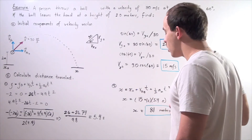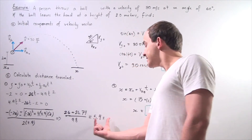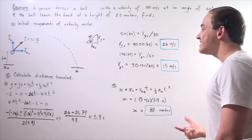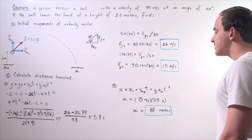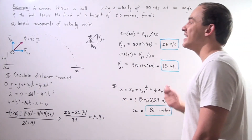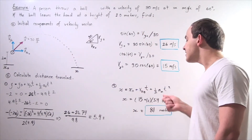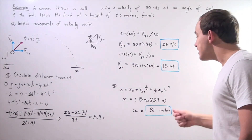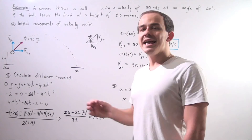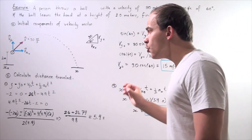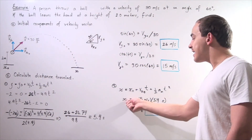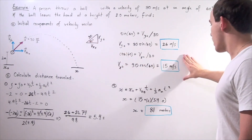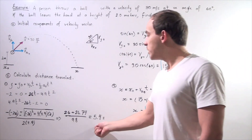Now we use this time interval — which tells us how long our object spent in the air — to solve for our distance along the x-axis. Our final position along the x-axis equals our initial position along the x-axis, plus our initial velocity along the x-axis multiplied by time, plus one-half A-x t-squared. Since the acceleration along the x-axis is 0 meters per second squared in free fall, that term cancels. Choosing x-initial as 0, we're left with x equals 15 meters per second times 5.4 seconds.